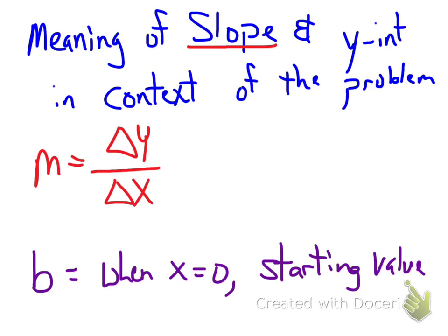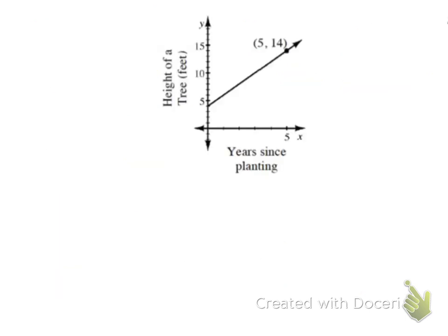So let's take a look at the first example. Here's a graph where our y-axis is the height of a tree in feet, and our x-axis is the years since planting.